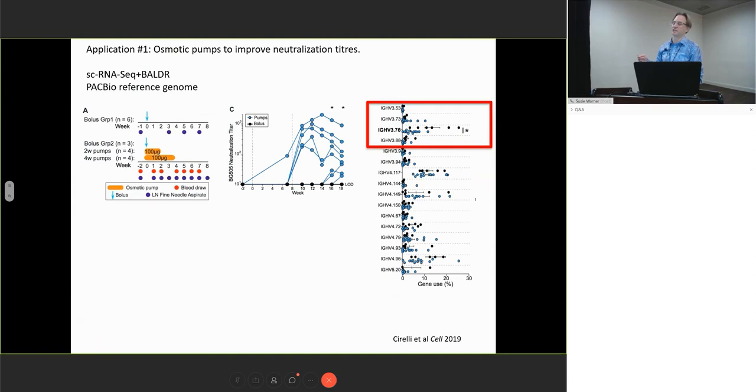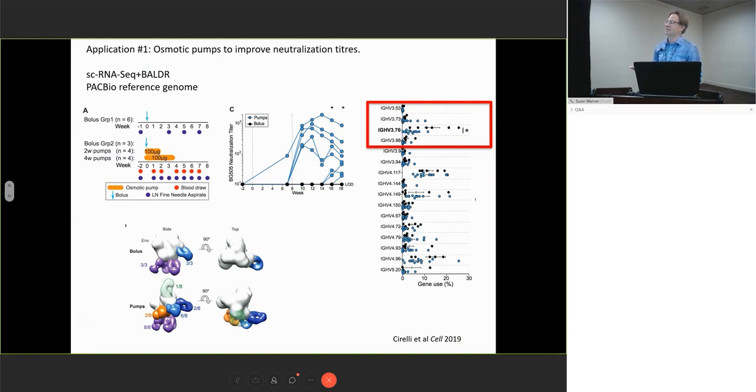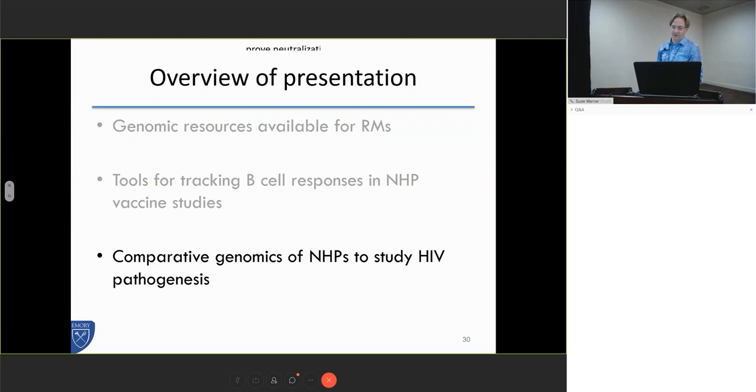We then used the Baldr method and sequenced single cells, got the pairs, and Andrew Ward took these pairs and mapped exactly where these antibodies were binding—or the dominant antibodies were binding—from these different monkeys. He showed that in the bolus animals you had a really restricted, more restricted binding to the envelope tended to be on the base of the immunogen, which was kind of useless. Lastly, in the animals that were getting the pumps, we had a more broad usage.